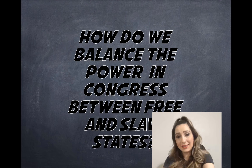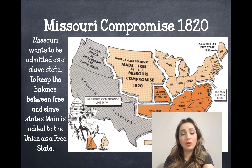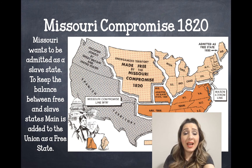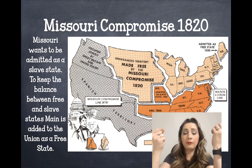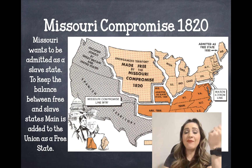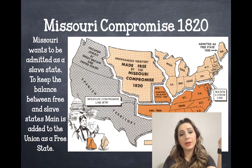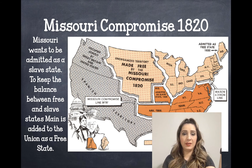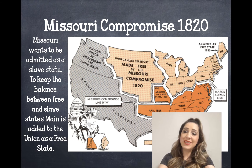In 1820, Missouri wants to be admitted as a slave state. At this time, we have an equal number of free versus slave states. If Missouri comes in as a slave state, then the southern states would have more power in Congress. The question is: how do we balance that out and make it fair?